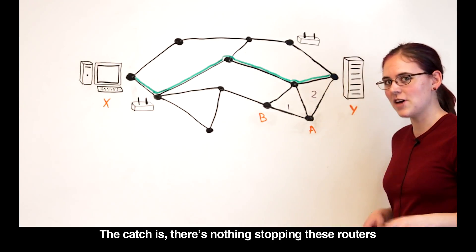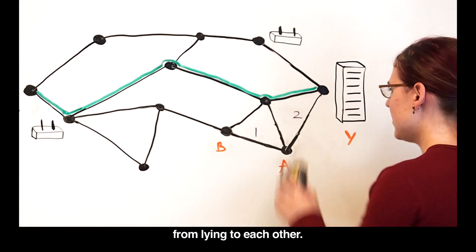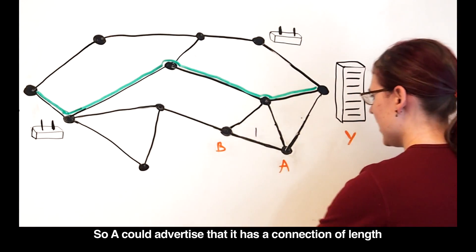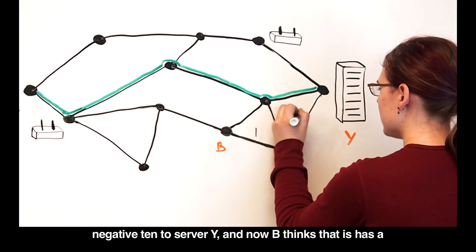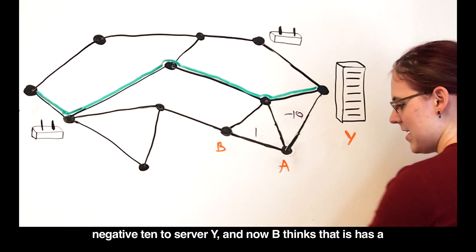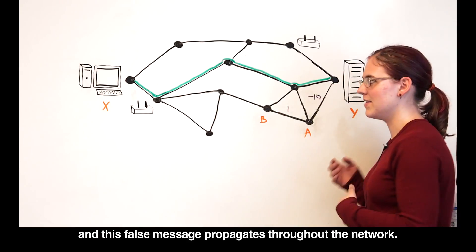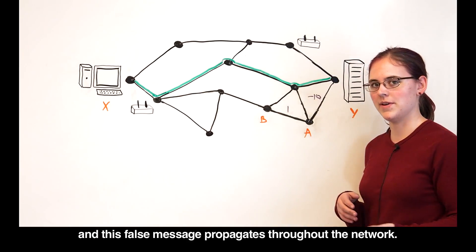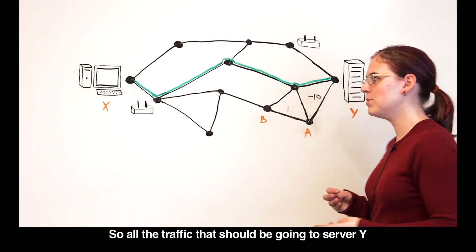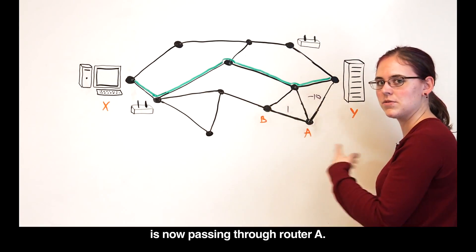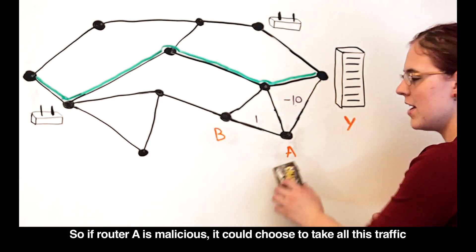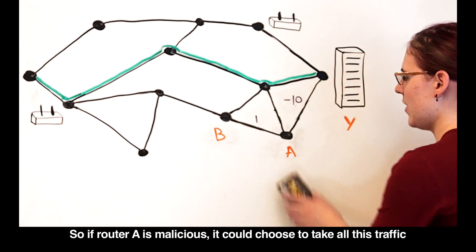The catch is, there's nothing stopping these routers from lying to each other. Router A could advertise that it has a connection of length negative 10 to server Y. Now B thinks that it has a connection of length negative 9 to server Y, and this false message propagates throughout the network. All the traffic that should be going to server Y is now passing through router A. If router A is malicious, it could choose to take all this traffic and just drop it.